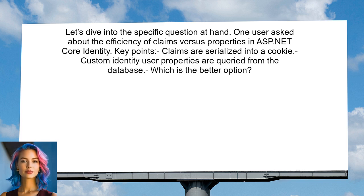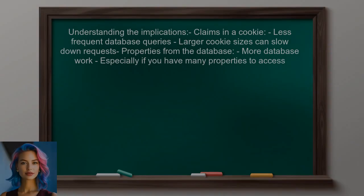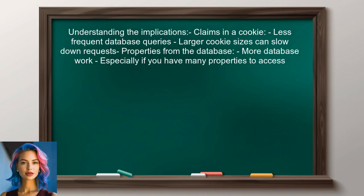On the other hand, custom identity user properties are queried from the database, which can increase database load if accessed frequently. So, which is the better option?